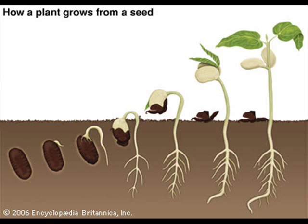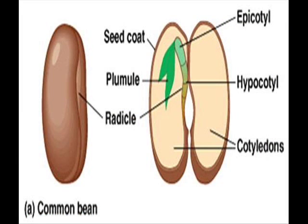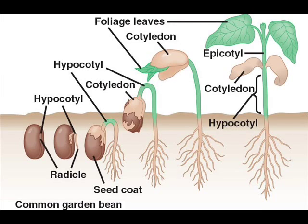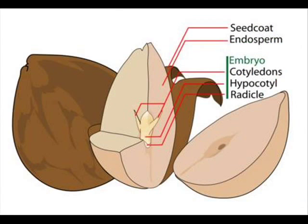Let us understand this amazing ability by reading through the germination process. The seed contains an immature plant called an embryo that resembles an adult plant complete with leaves and a root. The seed's leaves are called the cotyledons. Seeds that contain one embryonic leaf are known as monocotyledons or monocots. Seeds with two embryonic leaves are termed dicotyledons or dicots. The food found in the seed which nourishes the embryonic seedling during the early stages of development is known as the endosperm.